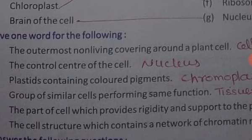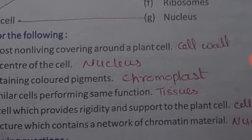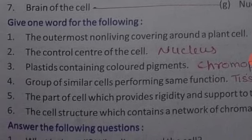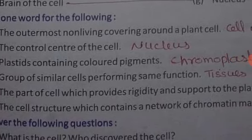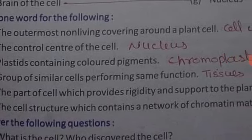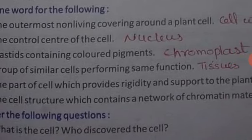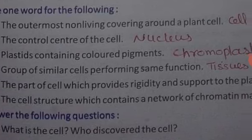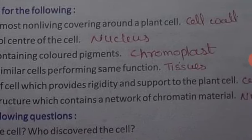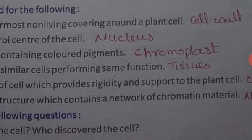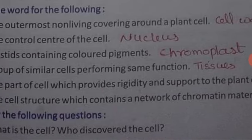Match the following: outermost non-living covering around a plant and the answer is cell wall. The control center of the cell, answer is nucleus. Plastids containing the color pigment, the answer is chromoplast. The group of similar cells performing the same functions, answer is tissues. The part of the cell which provides rigidity and support to the plant cell, answer is cell wall. The cell structure containing a network of chromatin material, answer is nucleus.